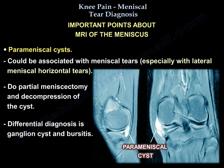Parameniscal cysts — if you see one, you could have a meniscal tear, especially with a lateral meniscus horizontal tear. For this, you will do a partial meniscectomy and decompression of the cyst. The differential diagnosis includes ganglion cyst and bursitis.